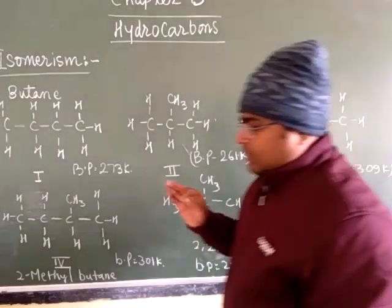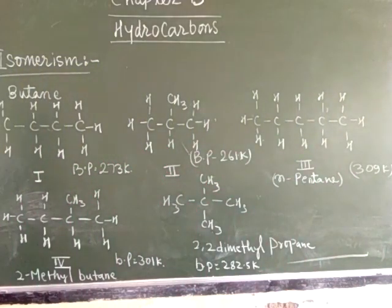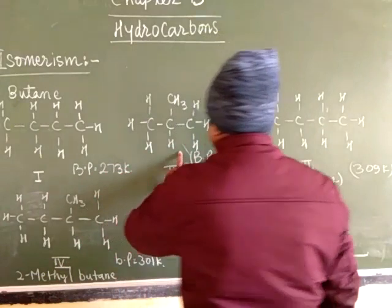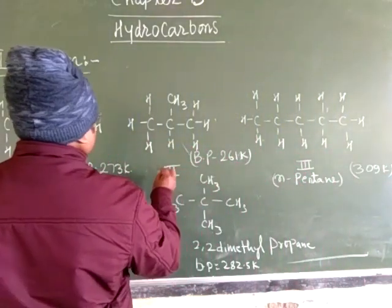Butane has two isomers and pentane has three isomers. In case of butane, one two three four, the name of this compound is butane and the common name is normal butane. The second will be isobutane and 2-methyl propane.